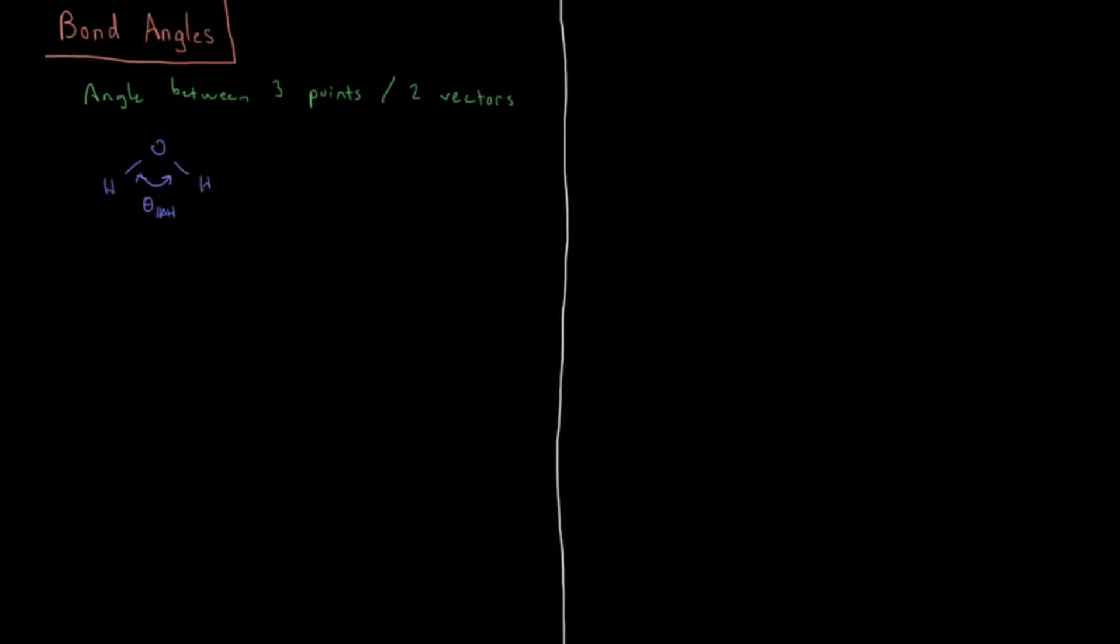And then we can also generalize that to atom names like I, J, K, or I have atoms I, J, and K. And then I have bond vectors RJI and RJK, pointing from J to K and from J to I.